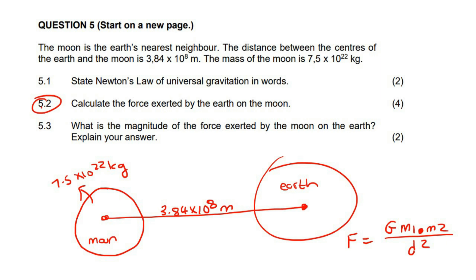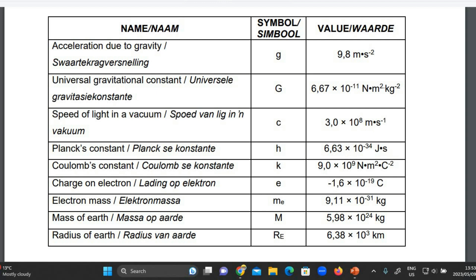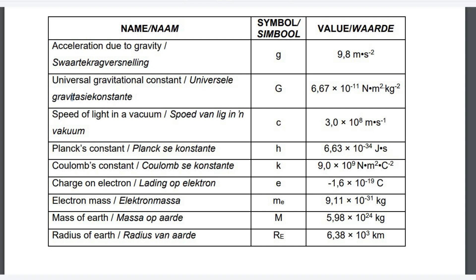They might as well just say, calculate the force between the two objects. So, we're just going to use this formula. We're not going to worry about Earth on Moon, Moon on Earth. So, let's go to our formula sheet and just go grab the Earth's mass. We're going to need that.